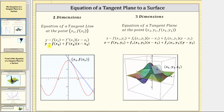If we solve this equation for y by adding f of x1 to both sides, we have the equation of a tangent line to a curve in two dimensions. In three dimensions, we have a function of two variables, and therefore, instead of the derivative, the equation of a tangent plane involves the first-order partial derivatives — the partial of f with respect to x and the partial of f with respect to y.